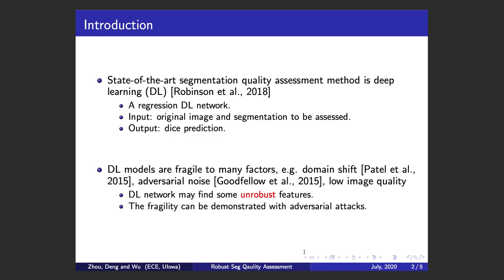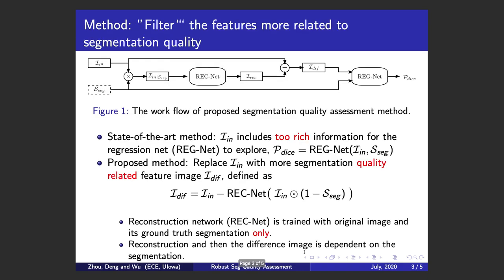The fragility can also be demonstrated with adversarial attacks. The current state-of-the-art method has the problem that the input image may include too rich information for the regression network to explore.